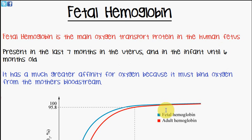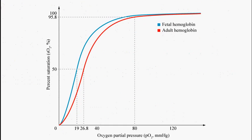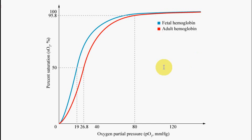It has a much greater affinity for oxygen because it must bind oxygen from the mother's bloodstream. The image here is an oxygen dissociation curve for fetal hemoglobin and normal adult hemoglobin. You can see that the fetal hemoglobin curve is shifted to the left, which means it can bind oxygen at a much lower partial pressure.